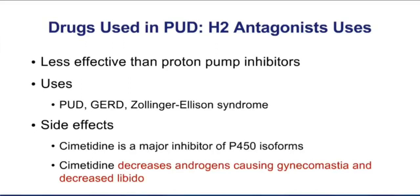When we think of side effects for the H2 blockers, we're mostly focusing on cimetidine. Cimetidine has an anti-androgenic effect — it can block androgen receptors, which can result in gynecomastia and decreased libido. But when you think about cimetidine, you're always thinking about its P450 inhibitor effect. It's probably the most classic of the P450 inhibitors, with lots of drug interactions. A patient who's on cimetidine is typically going to have elevated levels of other medications in their body, which could lead to an increased risk of side effects.